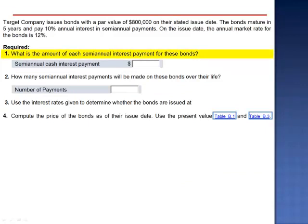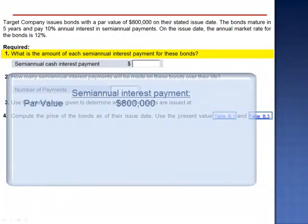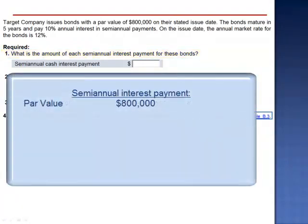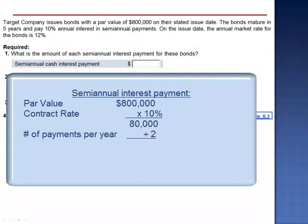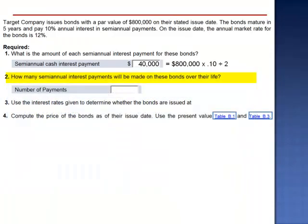What's the amount of each semi-annual interest payment for these bonds? The semi-annual interest payment is based on the stated rate, the contract rate. $800,000 multiplied by 10% is $80,000 divided by 2 is $40,000. How many semi-annual interest payments will be made on these bonds over their life? There will be 2 payments per year for 5 years, a total of 10 semi-annual payments of $40,000.